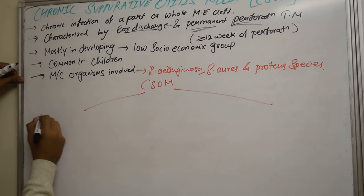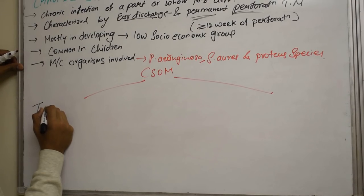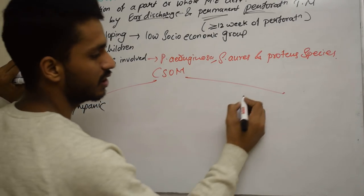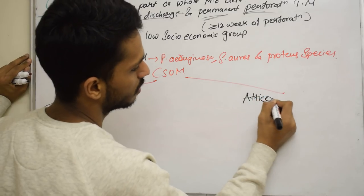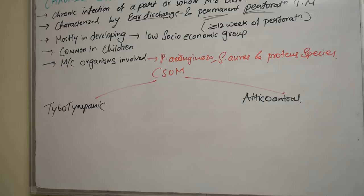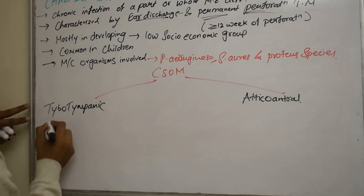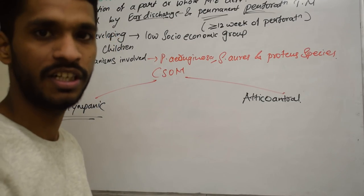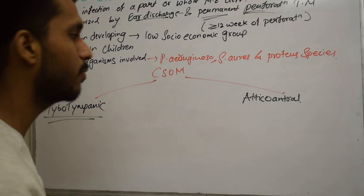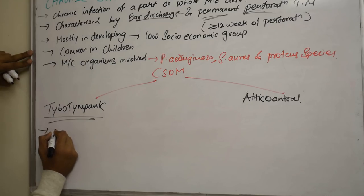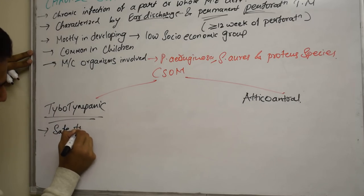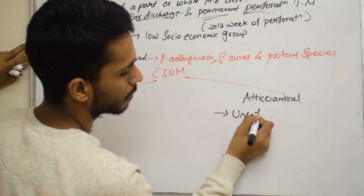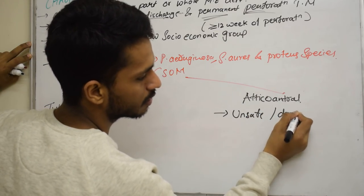CSOM is of two types: first is tubotympanic type, and the other is atticoantral type. The tubotympanic type is also called the safe type, and the atticoantral type is also called the unsafe or dangerous type.